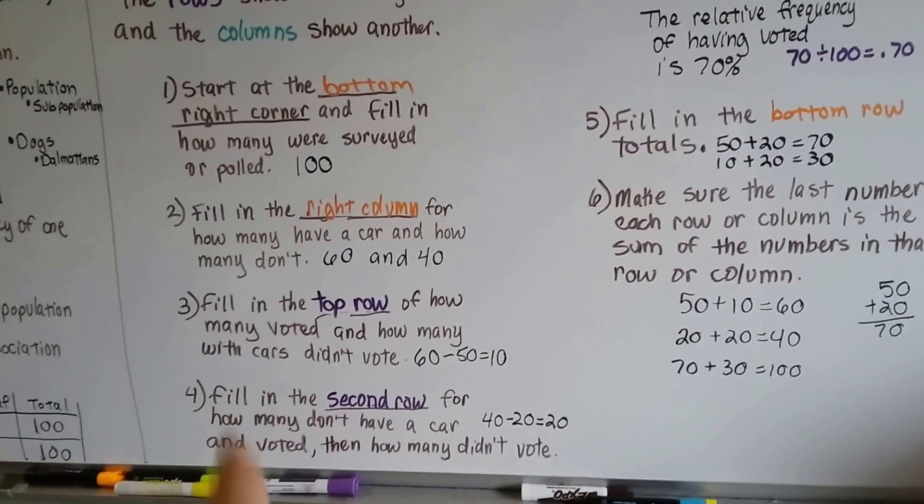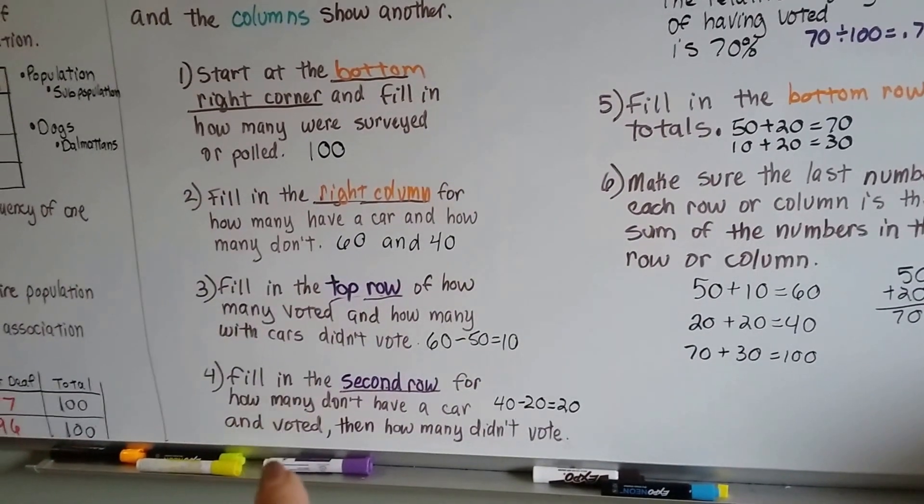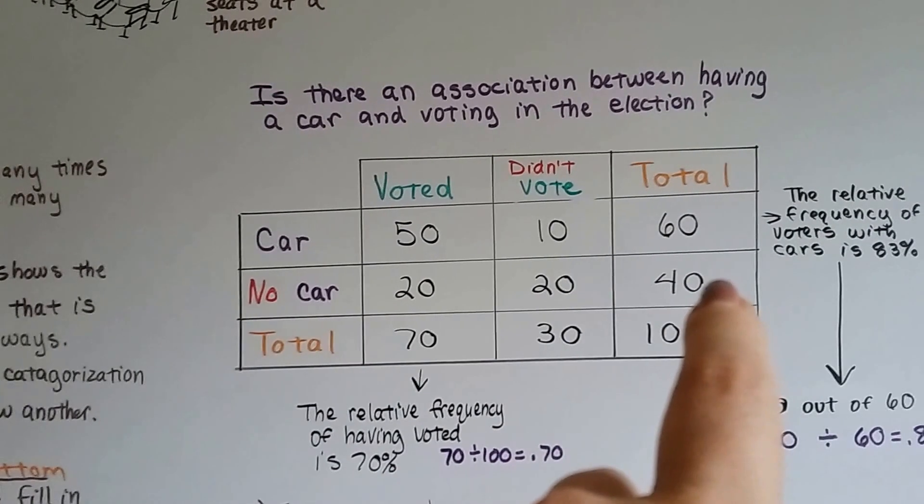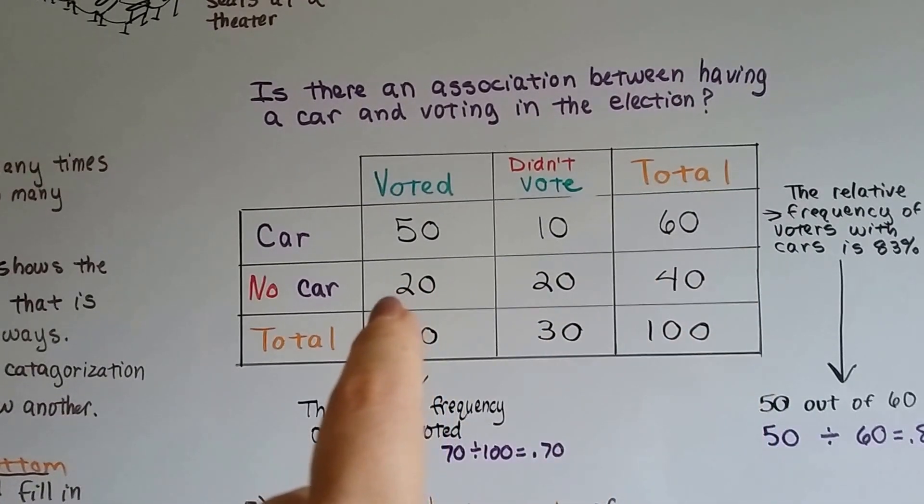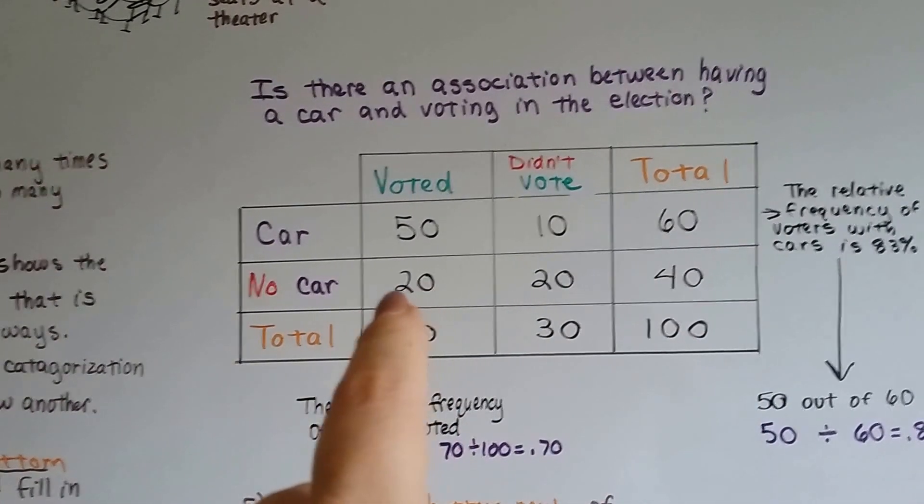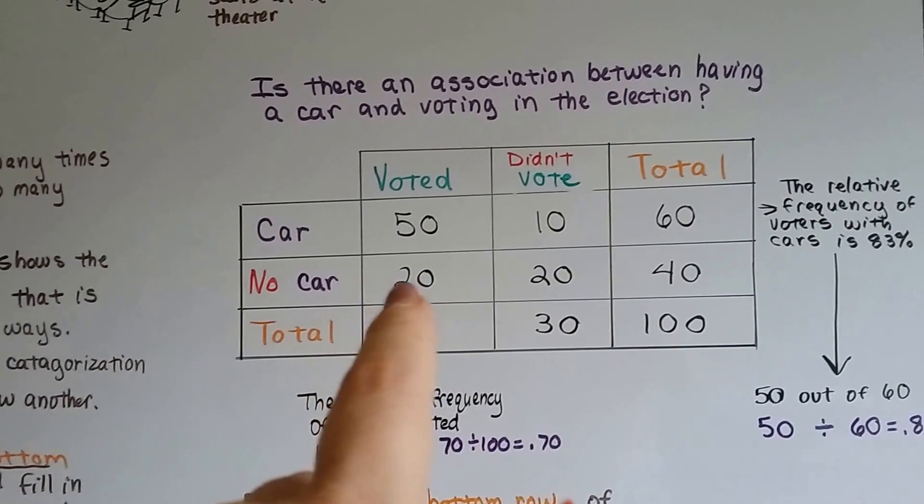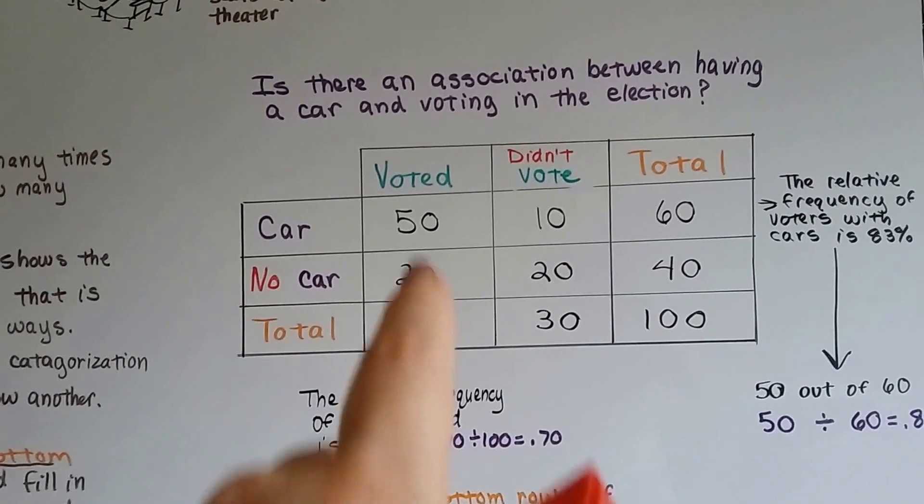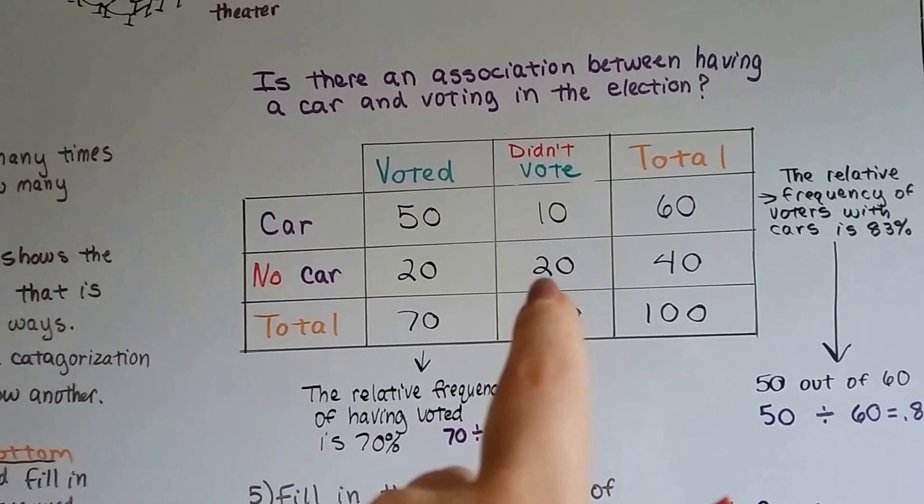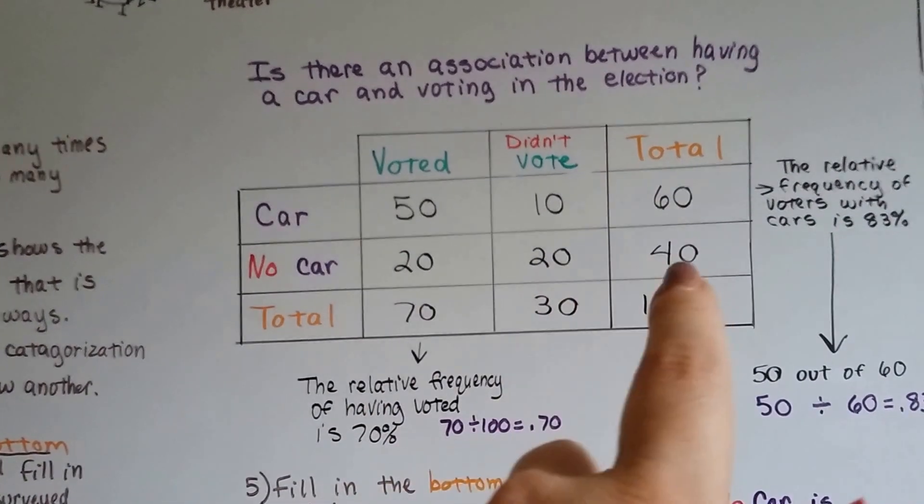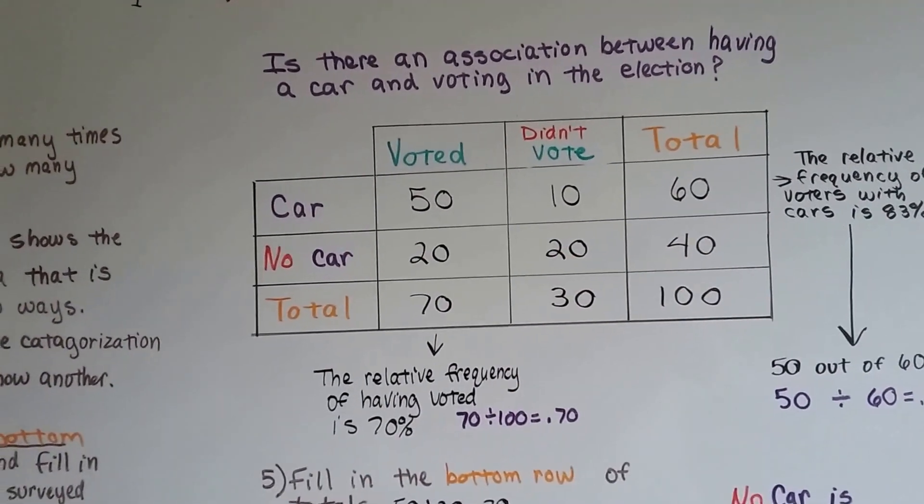Then we fill in the second row for how many don't have a car and voted, and then how many didn't vote. We know the total is 40, and when we find out from our data that the answer is 20 for not having a car but having voted, then we know that the balance must be 20 because 20 plus 20 is 40.